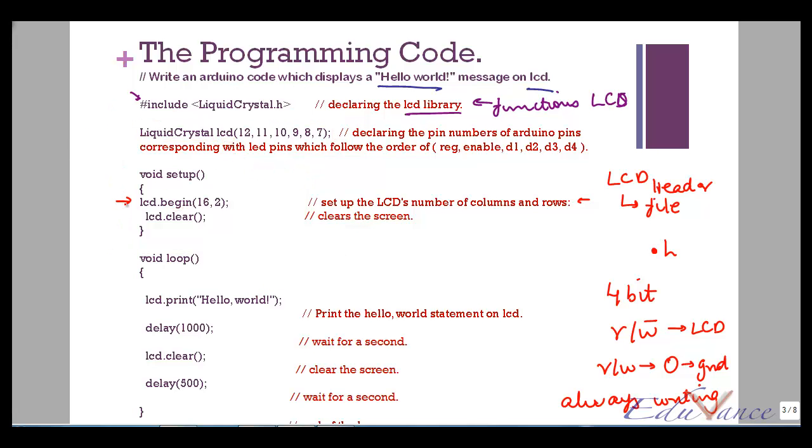So LCD.begin, then the number of columns and rows. So I have 16 columns and two rows. And then I will clear the LCD by using the function LCD.clear. Again, the dot clear is a part of this header file.